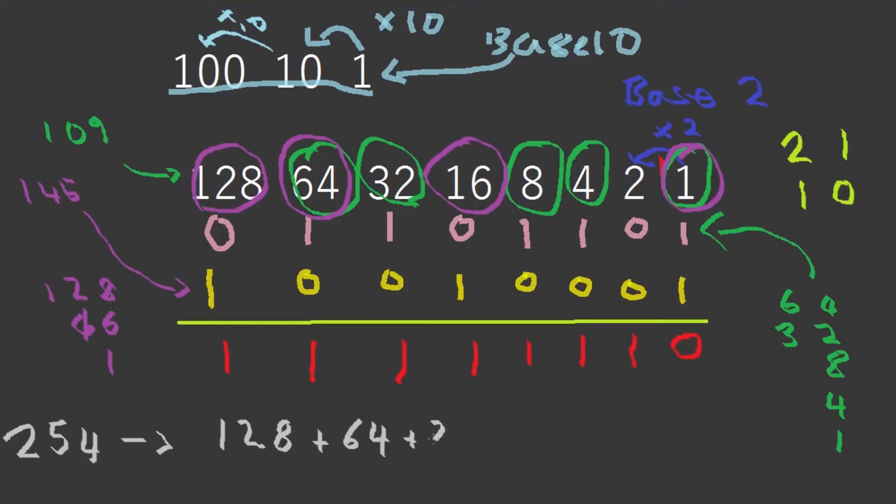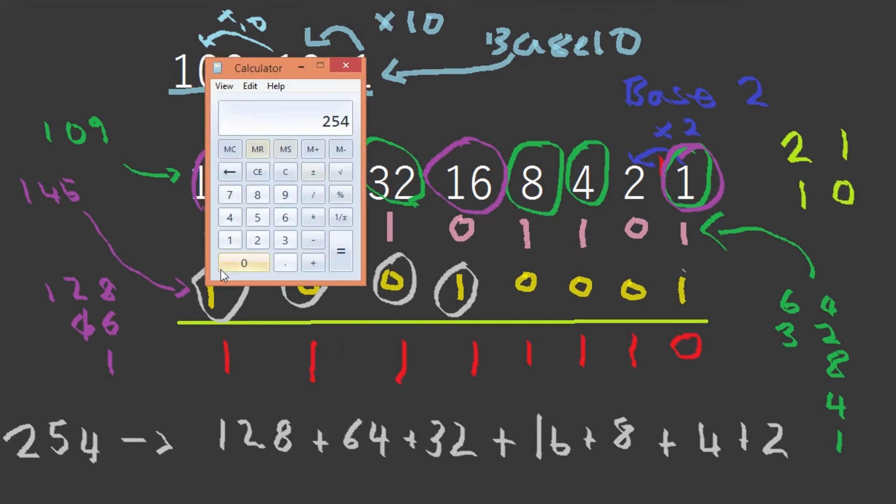Let's check. 128 plus 64 plus 32 plus 16 plus 8 plus 4 plus 2. Let's see if that equals—let's see: 128 plus 64 plus 32 plus 16 plus 8 plus 4 plus 2, and what do we get? 254.